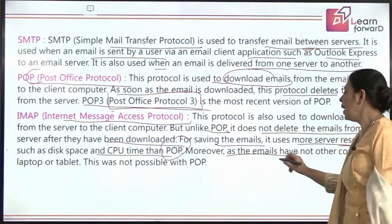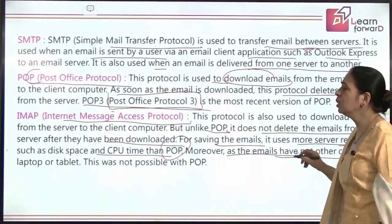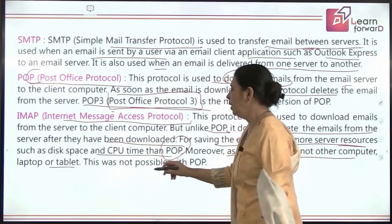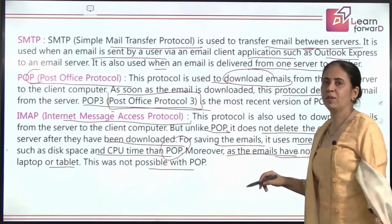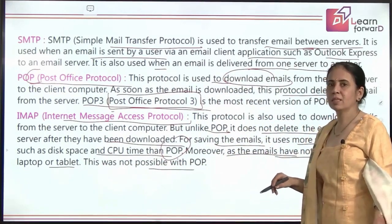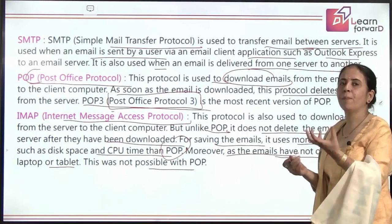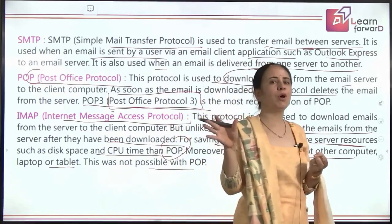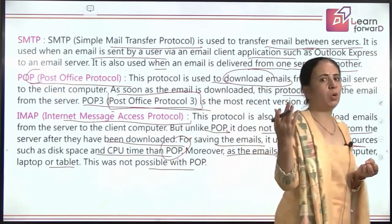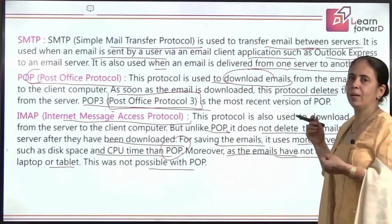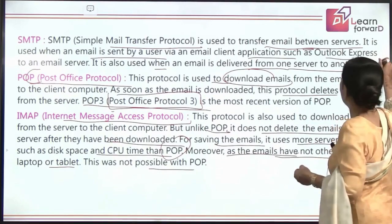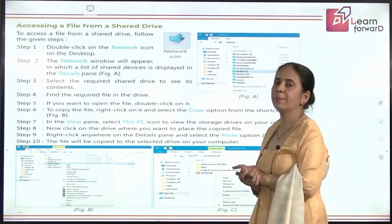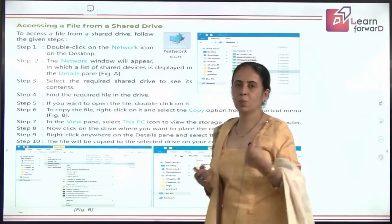Because the emails are not deleted, IMAP uses more server resources like storage space and CPU time compared to POP3. However, the advantage is that you can access the email on any other computer, laptop, or tablet, which was not possible with POP3. Sometimes you open your email on your phone, sometimes on a desktop or laptop. So every time the access needs to be available across devices, that is why the backup is kept on the main server as well.